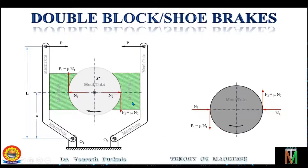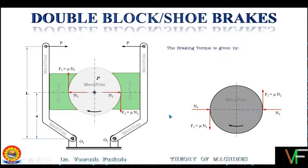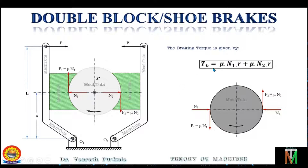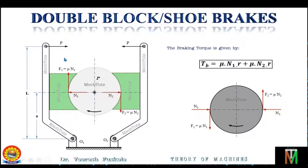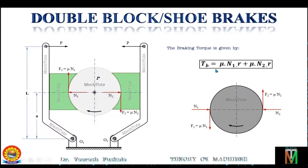These are the forces acting on both the left side and the right side block when the drum rotates in the clockwise direction. The braking torque in case of double block brake is the sum of the braking torques of both levers: Tb = μN1r + μN2r, where μN1r is the torque applied by the left side lever and μN2r is the torque applied by the right side lever. So in case of double shoe brake, the torque becomes two times.